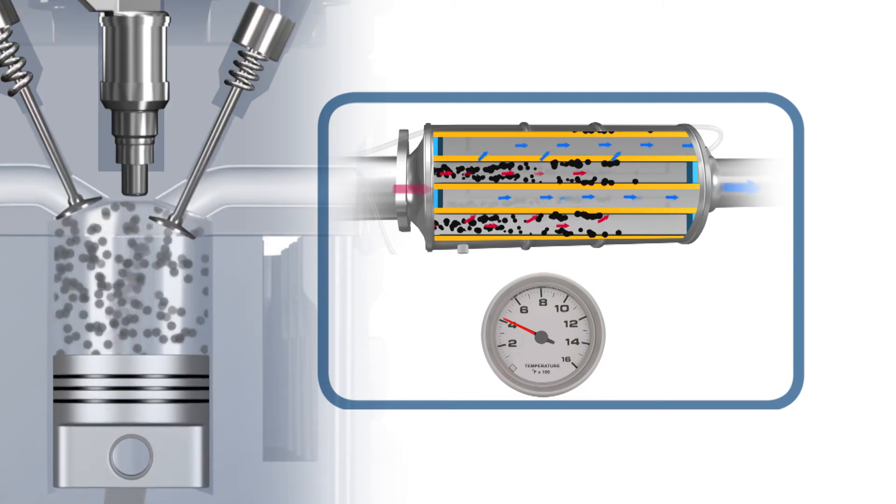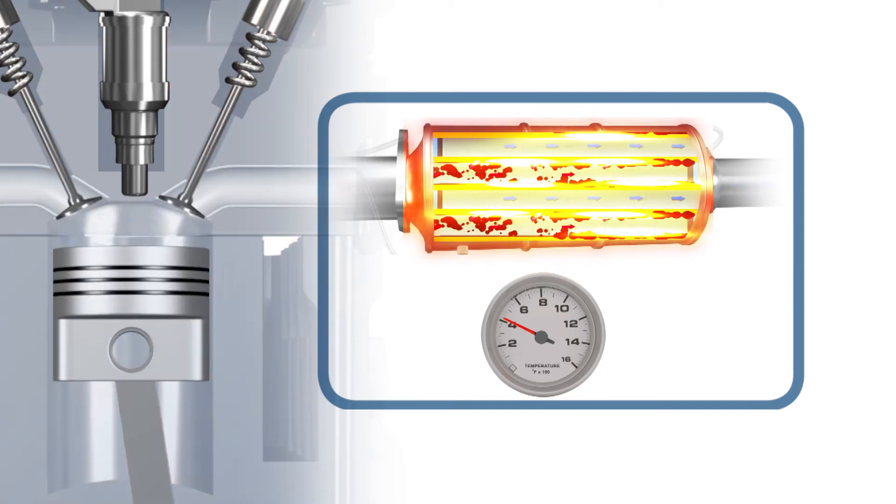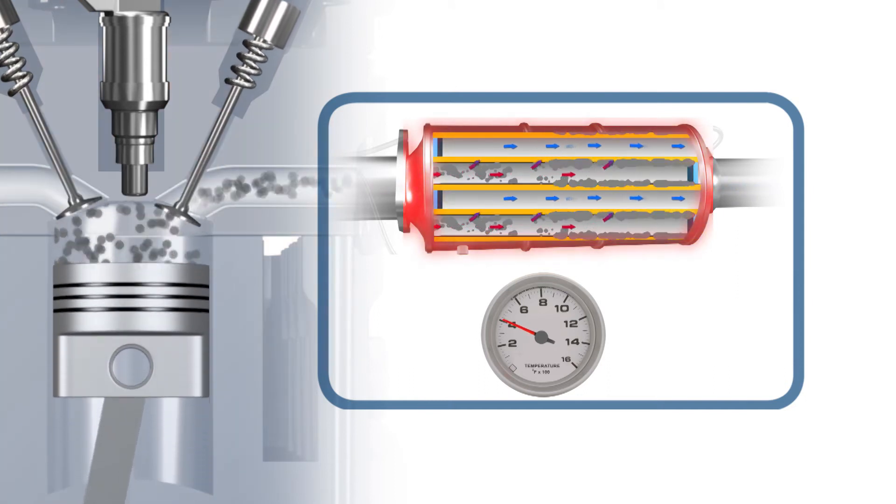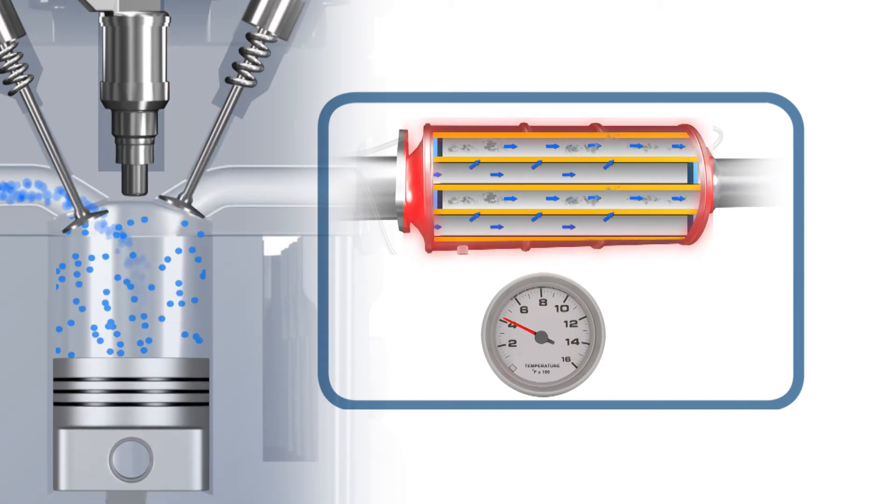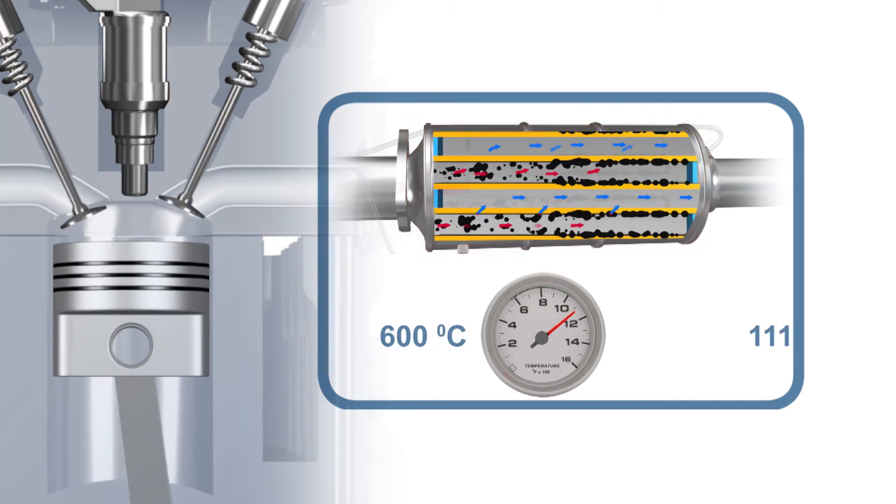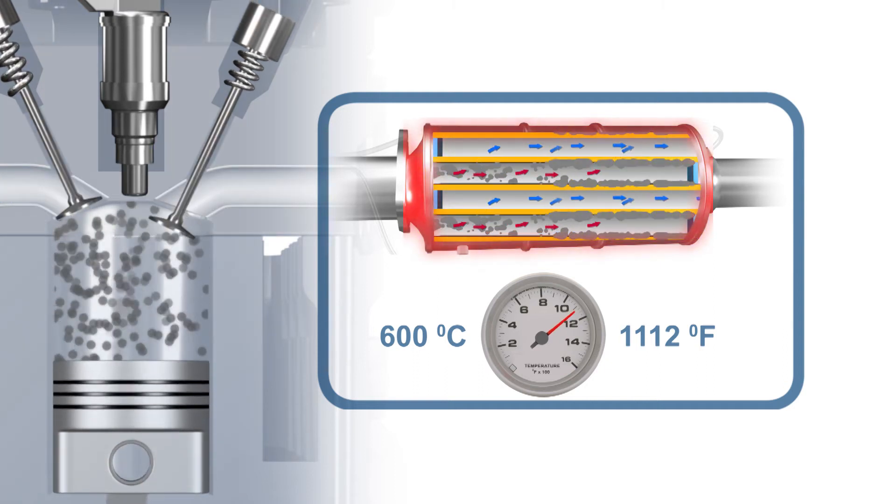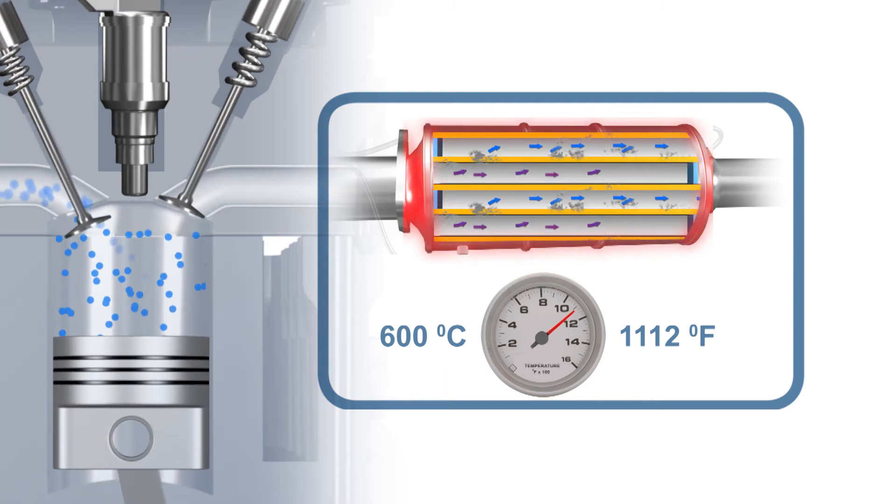During regeneration, additional fuel is injected via multiple post injections in order to increase the exhaust gas temperature. During this period, the DPF temperature is raised to approximately 600 degrees Celsius or 1100 degrees Fahrenheit, and the accumulated soot is oxidized or burned off as CO2.